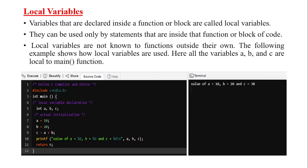Local variables. Variables that are declared inside a function or block are called local variables. They can be used only by statements that are inside that function or block of code. Local variables are not known to functions outside their own because the lifetime of that local variables will be within that function only. The following example shows how local variables are used.